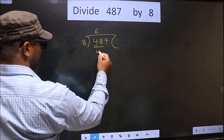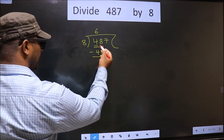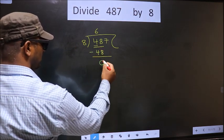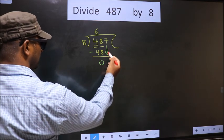8, 6, 48. Now you subtract. 48 minus 48 is 0. Now we bring down the beside number down. That is 7.